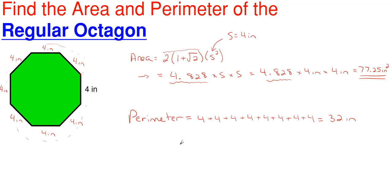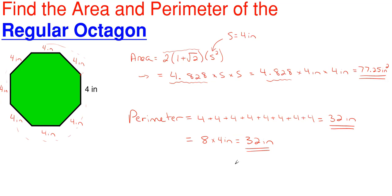You could do it that way, or since we have 8 sides, we could also write our perimeter as the number of sides times the side length — so 8 times 4 inches — which gives us 32 inches as well. You could do it either way; it will give you the same answer. For larger shapes, the second method is a little quicker because you don't have to write it out many times. Just keep in mind that your units for your perimeter have to match whatever units you're given as your dimension, because a perimeter is just a length. And that's how you find the area and perimeter for a regular octagon.